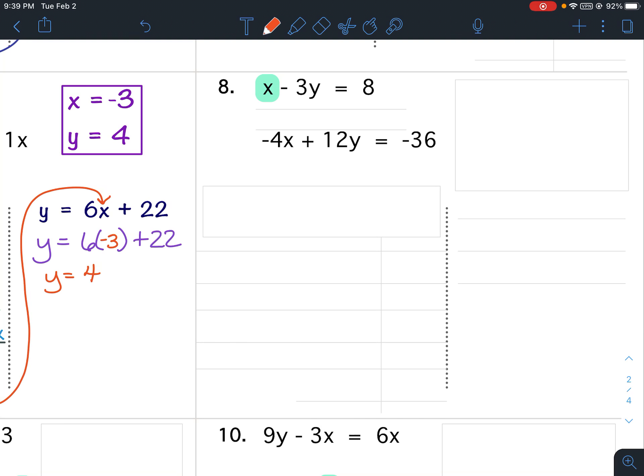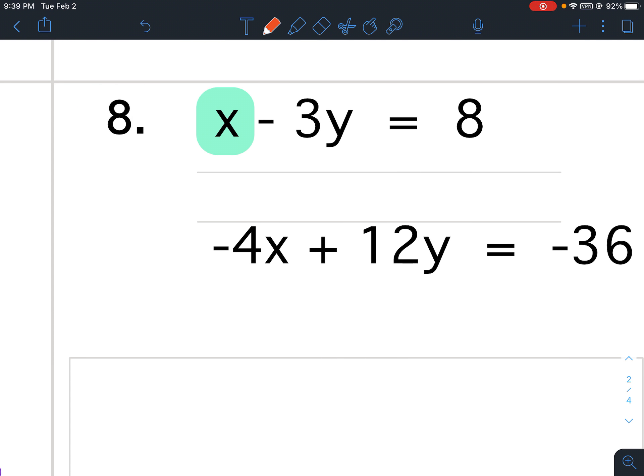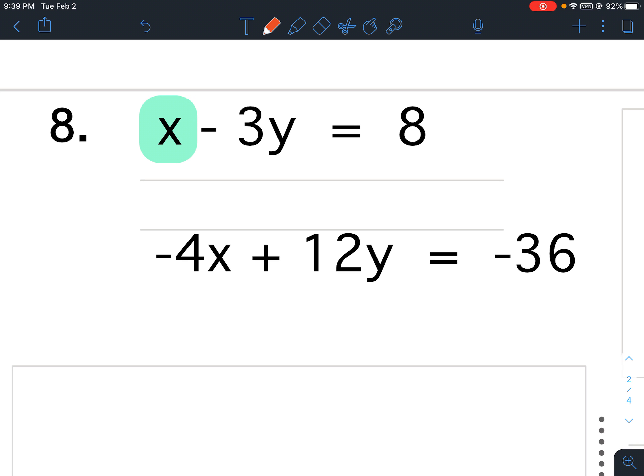Solve systems of equations using substitution, less than 10 worksheet, question number 8. I want to isolate the top x, so I need to do the inverse to negative 3y, so I'm going to add 3y to both sides.